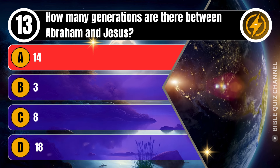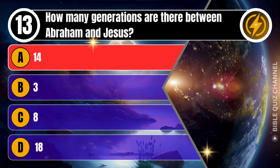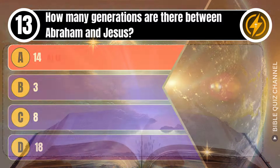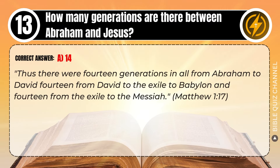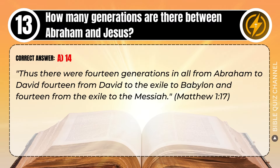Correct answer: A. 14. Explaining the Bible — Thus there were 14 generations in all from Abraham to David, 14 from David to the exile to Babylon, and 14 from the exile to the Messiah. Matthew, chapter 1, verse 17.